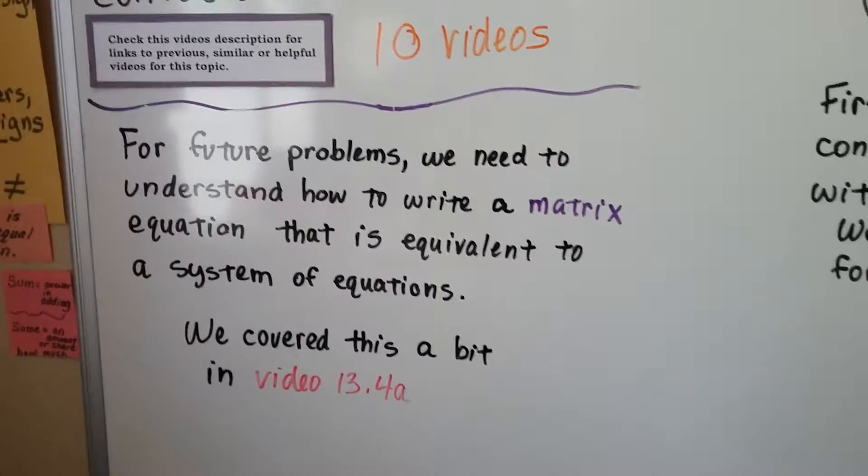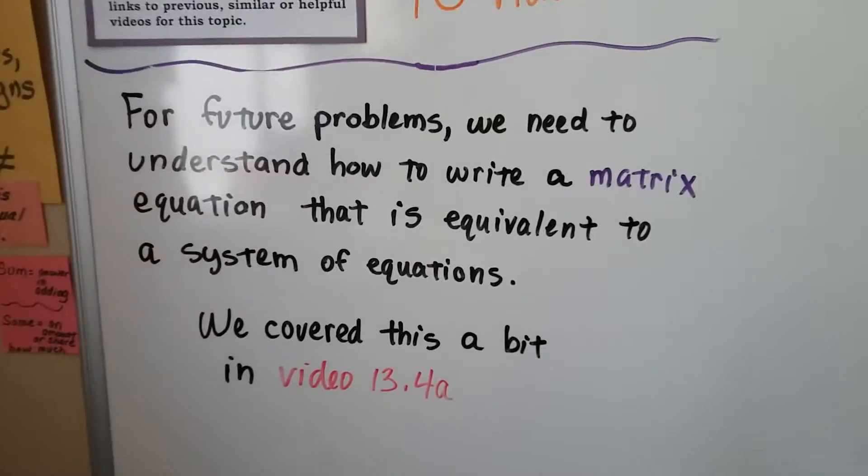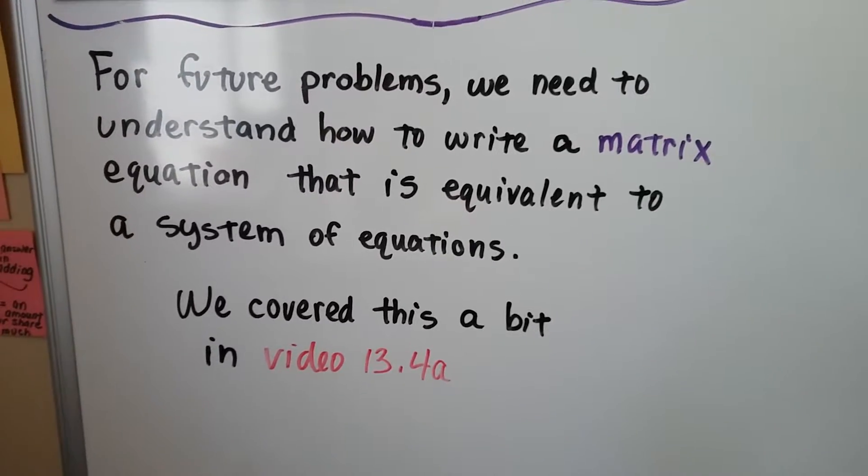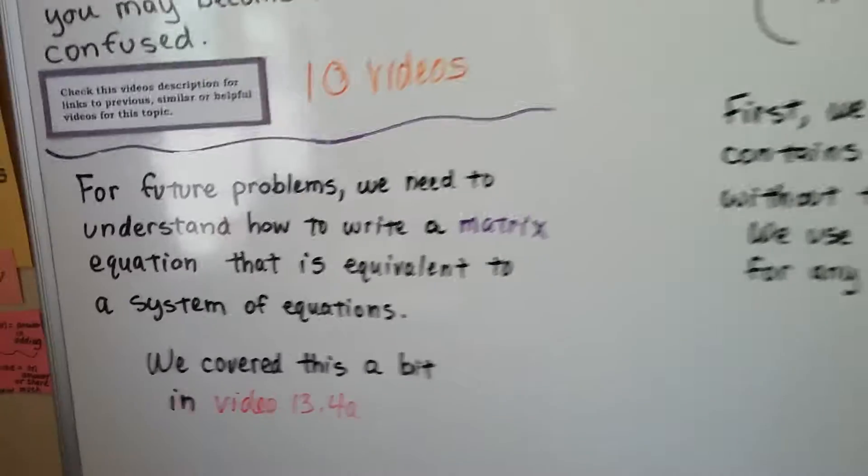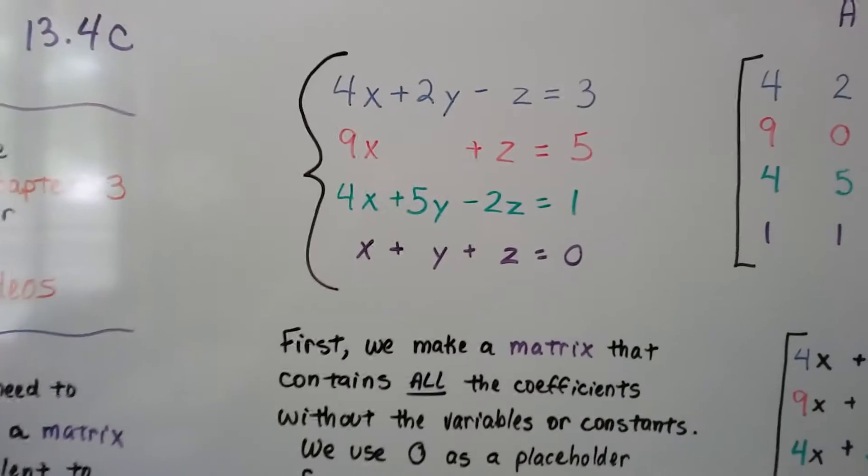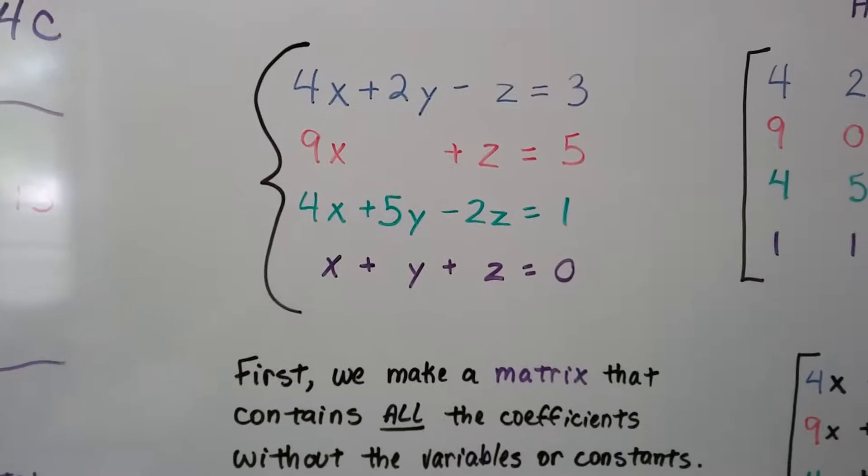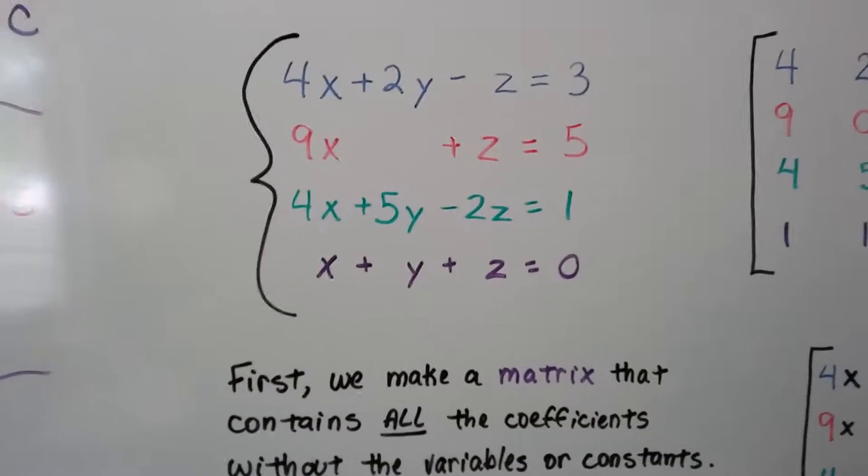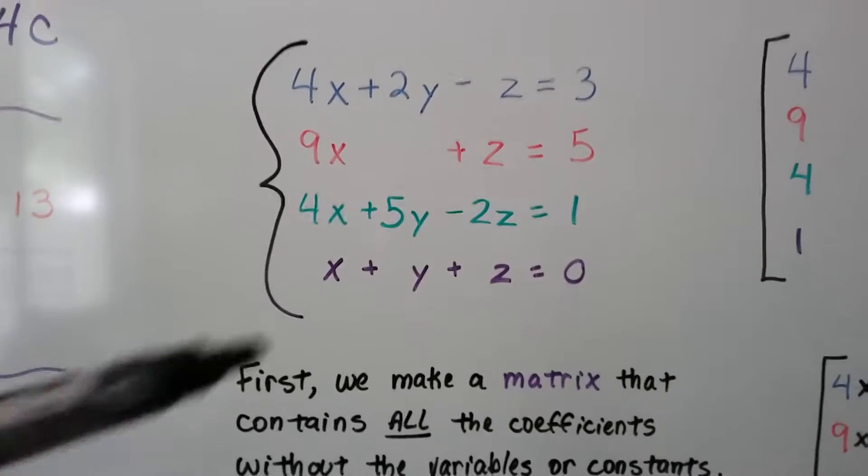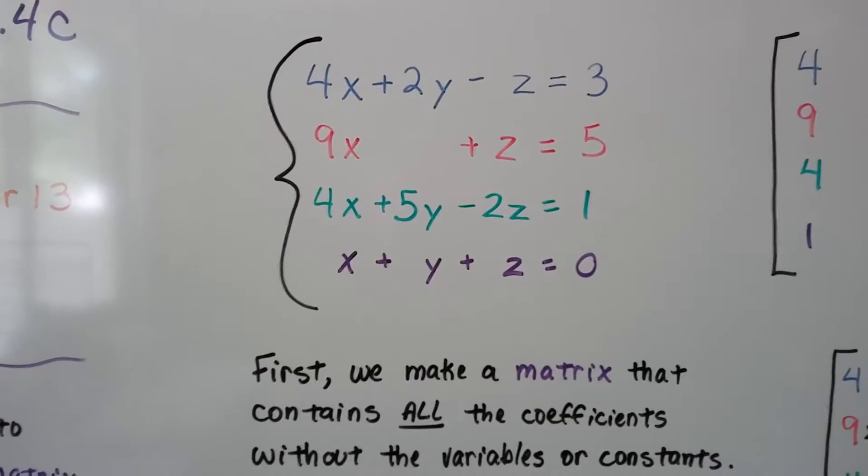For future problems, we need to understand how to write a matrix equation that's equivalent to a system of equations. So this is fairly straightforward and simple. We have a system of equations right here. You can see there's four equations. I've tried to line the variables up so you could see that there's a missing space here.